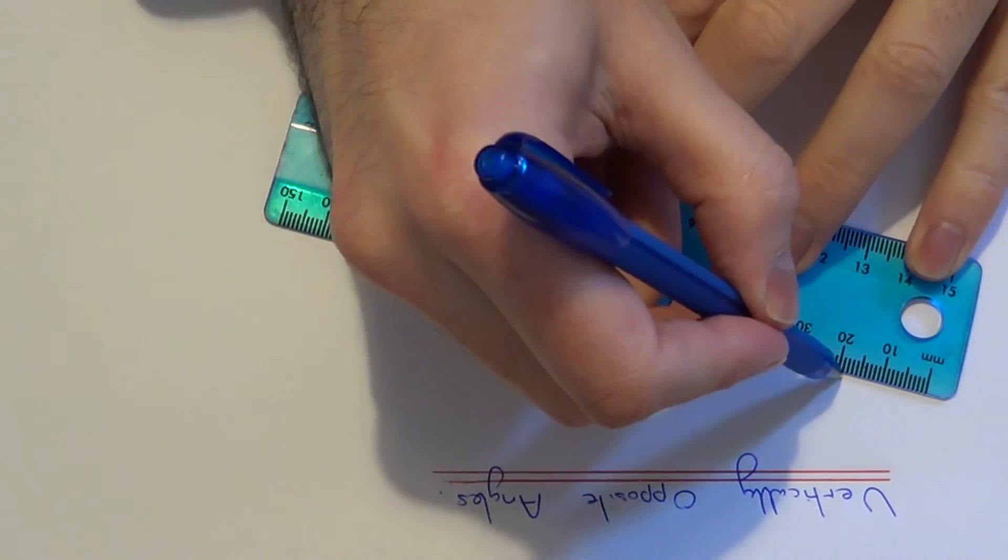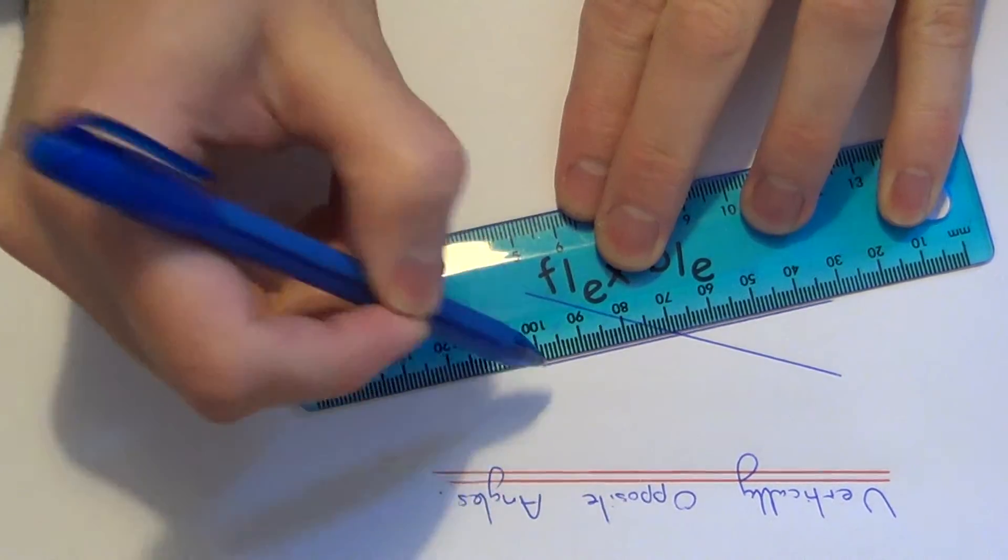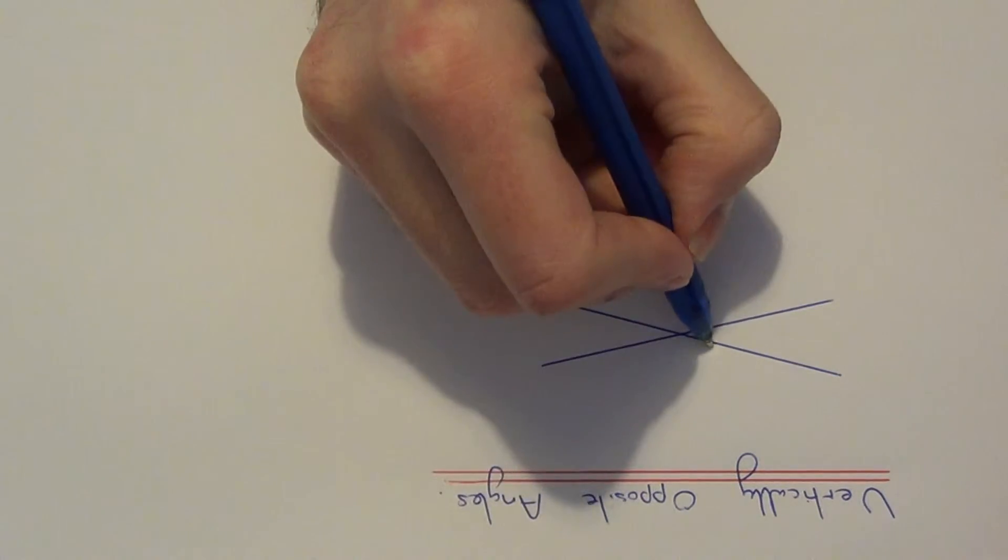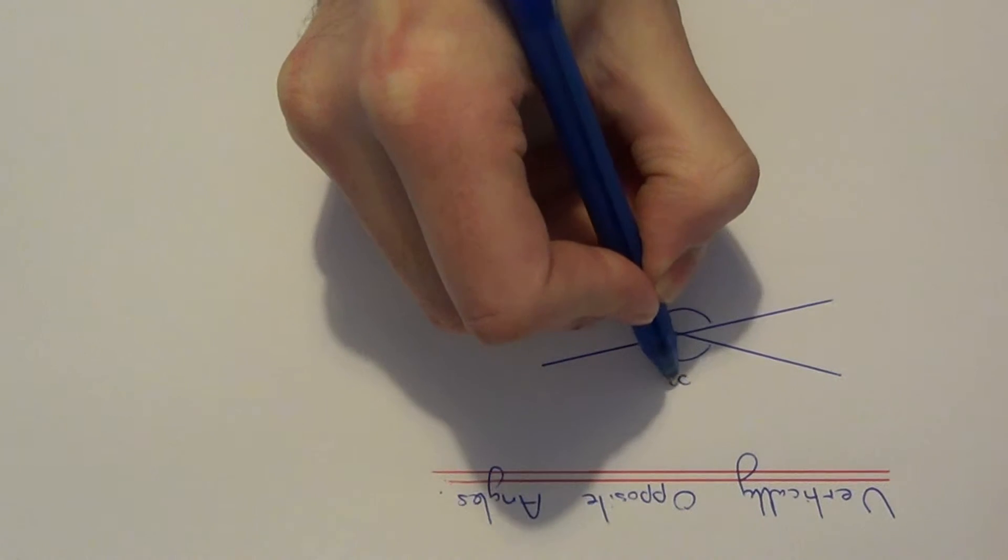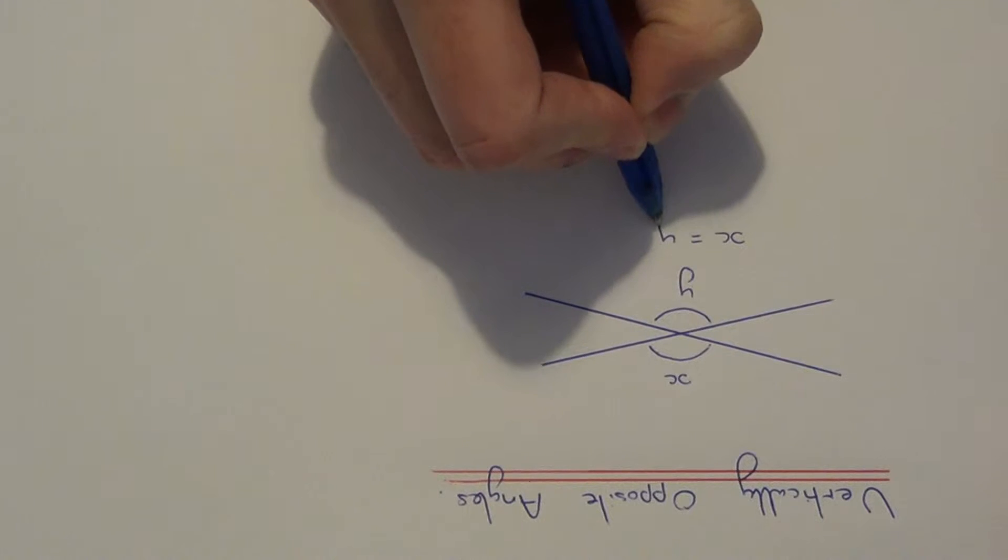If you have two intersecting lines, then the angles which are opposite each other will be the same. So angle X will be equal to angle Y.